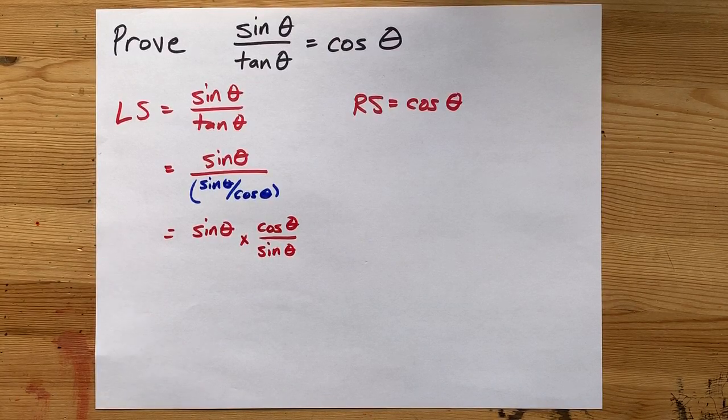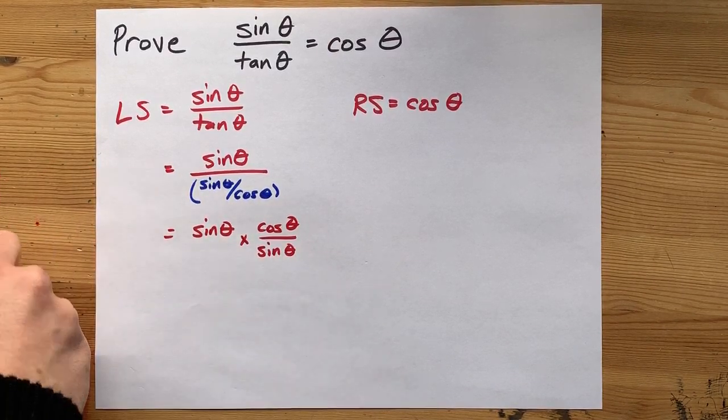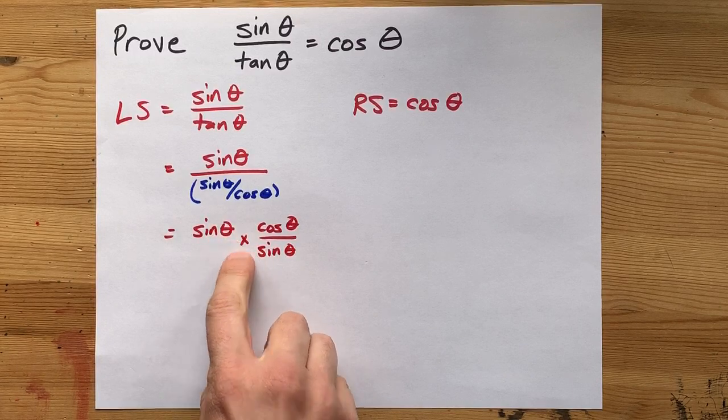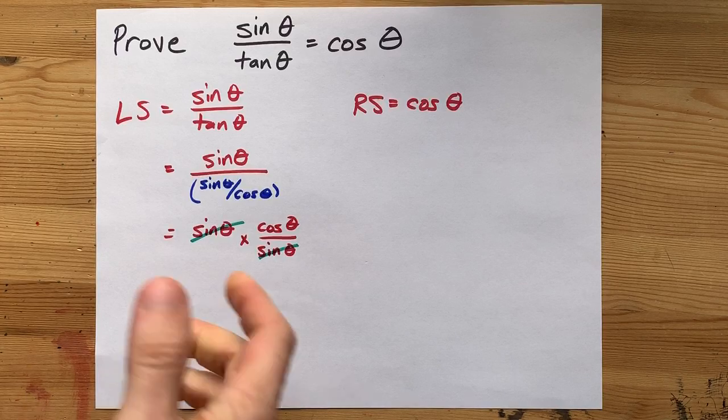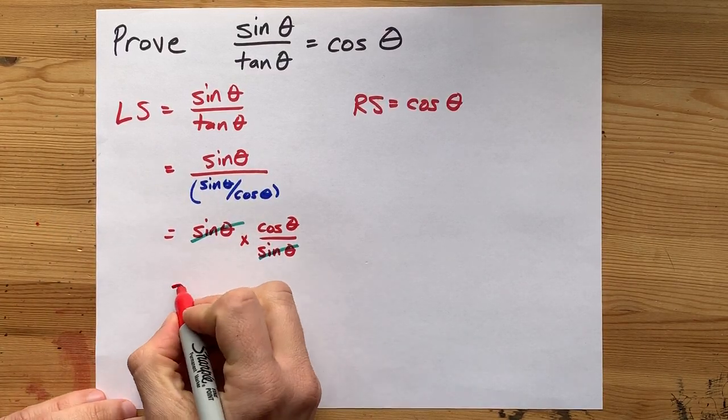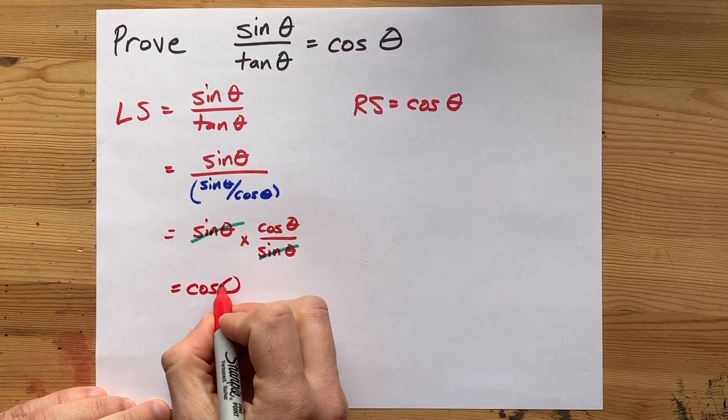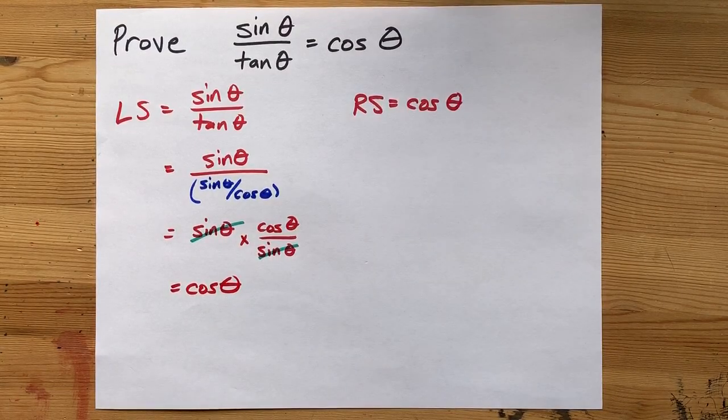Now, sine times cos over sine—that multiplication by sine and division by sine cancel each other out. So what I'm left with is just cos theta, which is identical to what's on the right-hand side.